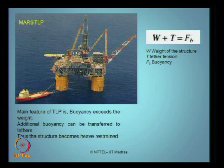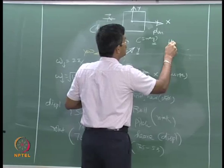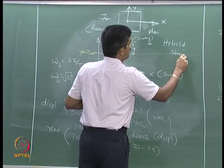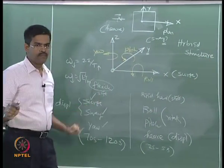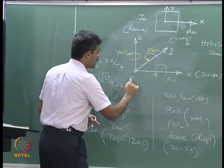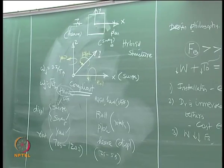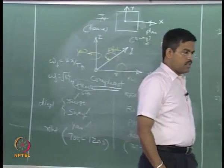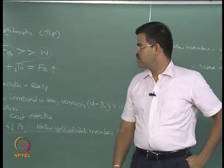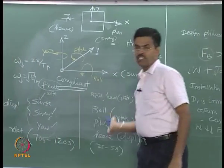The degrees of freedom of roll, pitch, and heave vary from a period of about two to five seconds — very low time period, very high frequency. Very high frequency means very high k, i.e., very stiff. Because of this unique combination of two sets of degrees of freedom, TLP is always addressed in the literature as a hybrid structure. Instead of calling these degrees of freedom flexible, people call them compliant platforms. Compliancy means flexibility. These are compliant degrees of freedom; the others are stiff degrees. TLP is a hybrid combination of both.